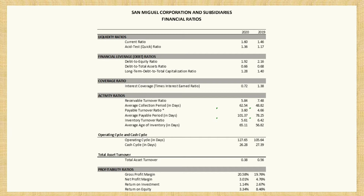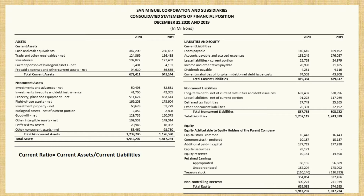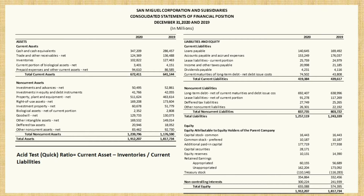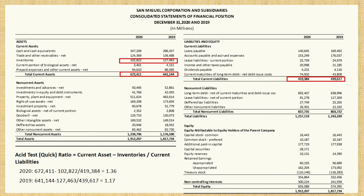Shown here are the financial ratios I computed, highlighting the liquidity ratios, financial leverage or debt ratios, coverage ratio, activity ratios, and profitability ratios. First, under the liquidity ratios, is the current ratio computed as current assets divided by current liabilities. The company is more liquid in 2020, having a current ratio higher than that of 2019, from 1.46 to 1.60. The liquidity of the company for 2020 can also be analyzed using the acid test or quick ratio. Similar with the current ratio, 2020 is higher than 2019, which indicates that their ability to cover short-term debt obligations with current assets increased from the prior year.